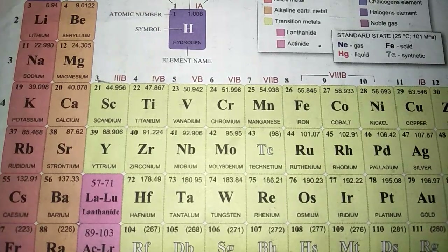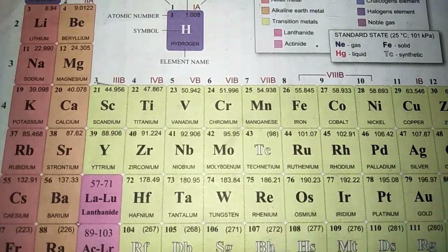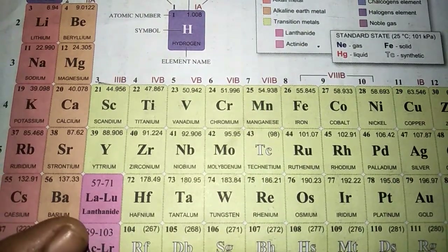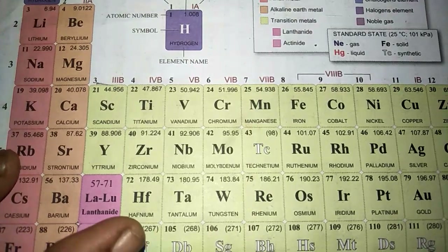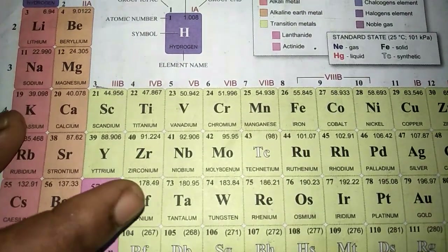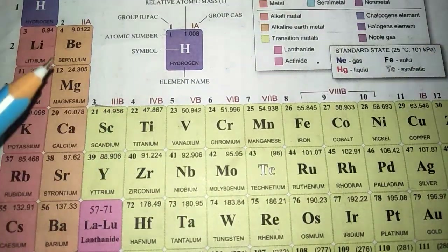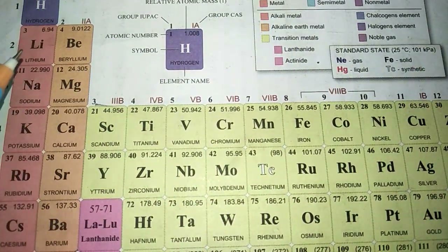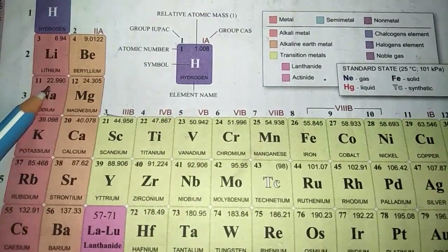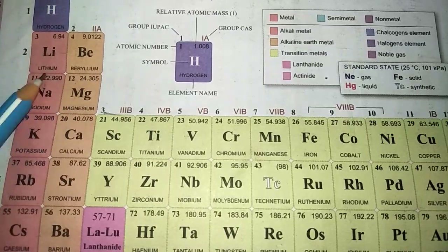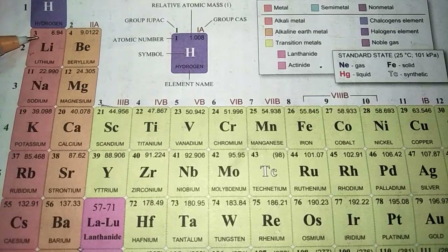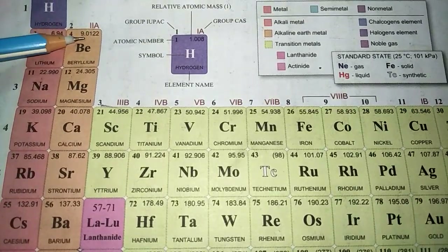Students, open your books to page number 142 — the periodic table of elements is clearly given there. The table has 18 groups. Group one and group two are also called s-block elements.